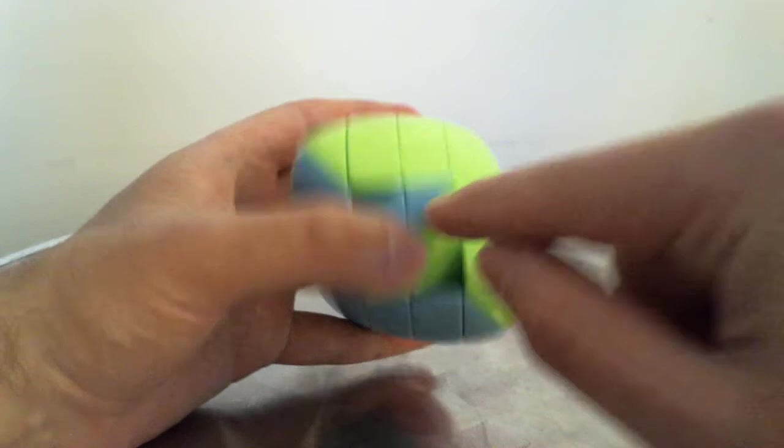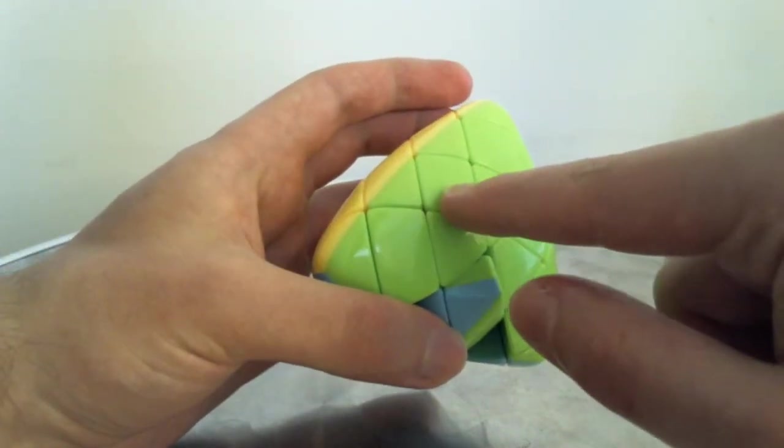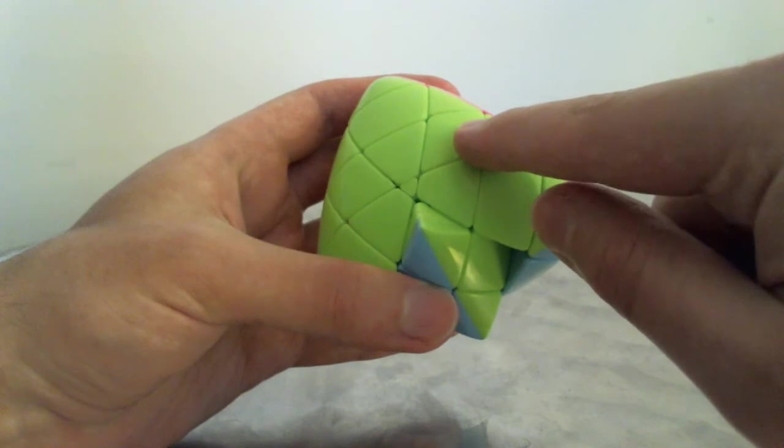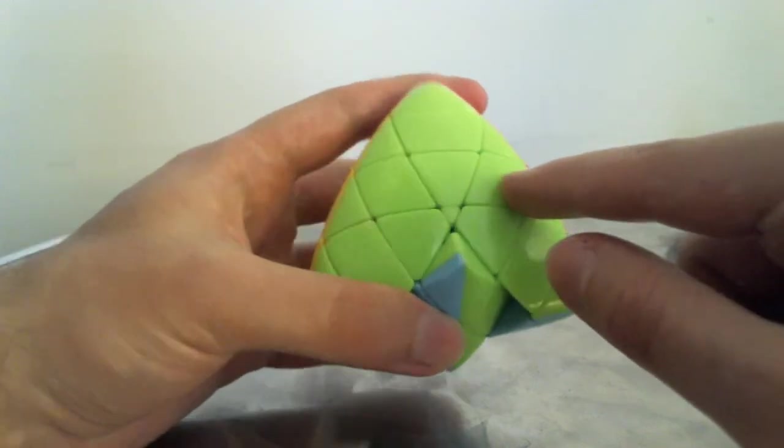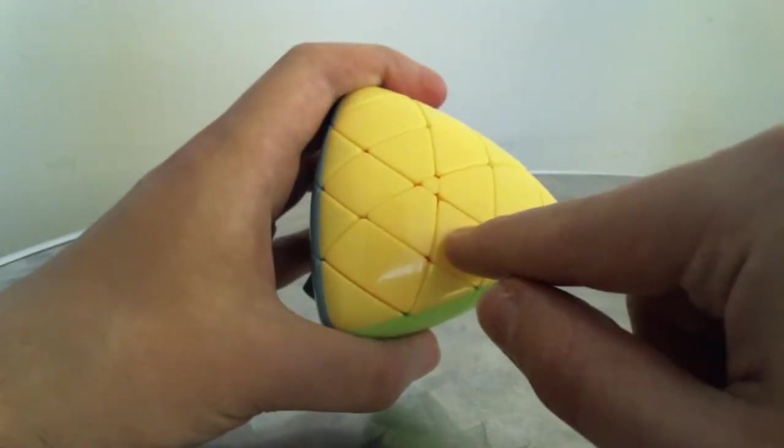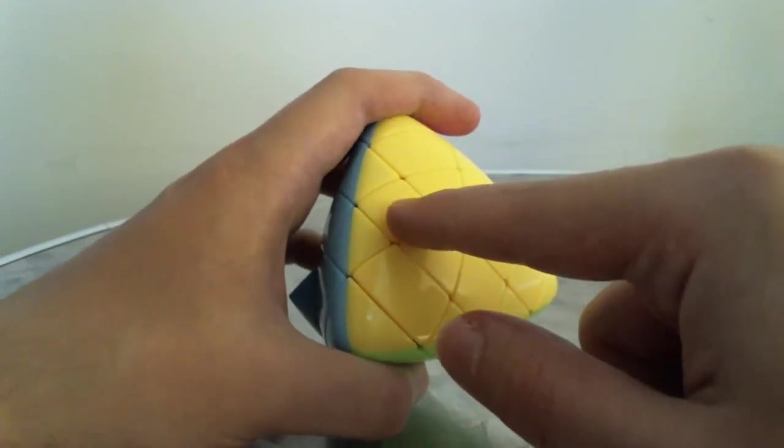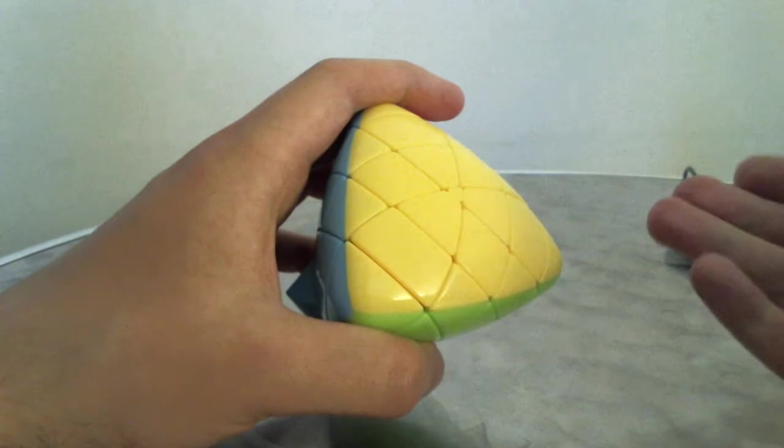For instance, as you can see, this green piece right here is exactly equivalent to this green piece right here and also to this green piece. This repeats itself—this yellow piece, this yellow center, and this yellow center, they are all equivalent.